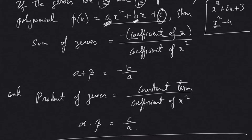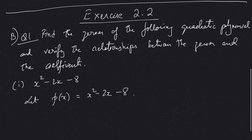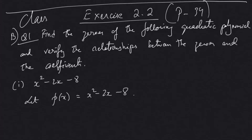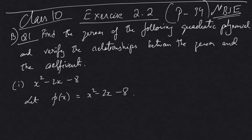To repeat: sum of zeros = -(coefficient of x) / (coefficient of x²), and product of zeros = constant term / (coefficient of x²). Now let's have a look at Exercise 2.2 on page 34 of the Class 10 mathematics textbook of NBSE — the Nagaland Board of School Education — which is almost equivalent to the NCERT textbook.